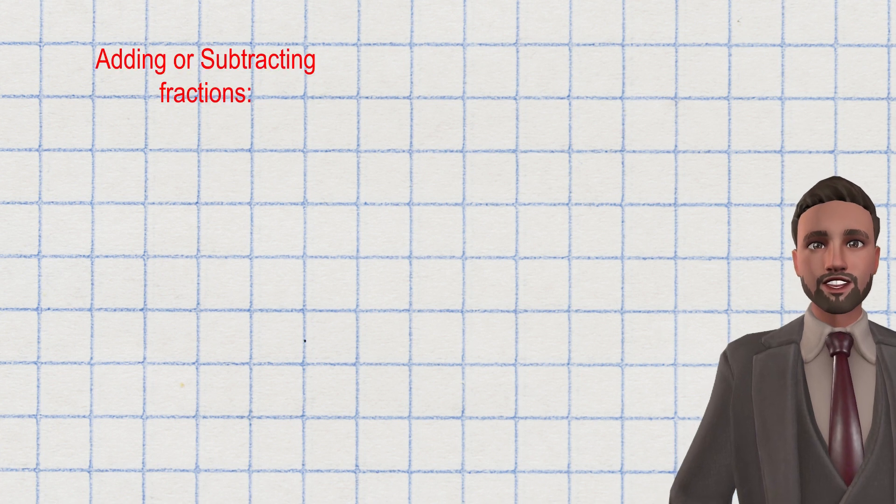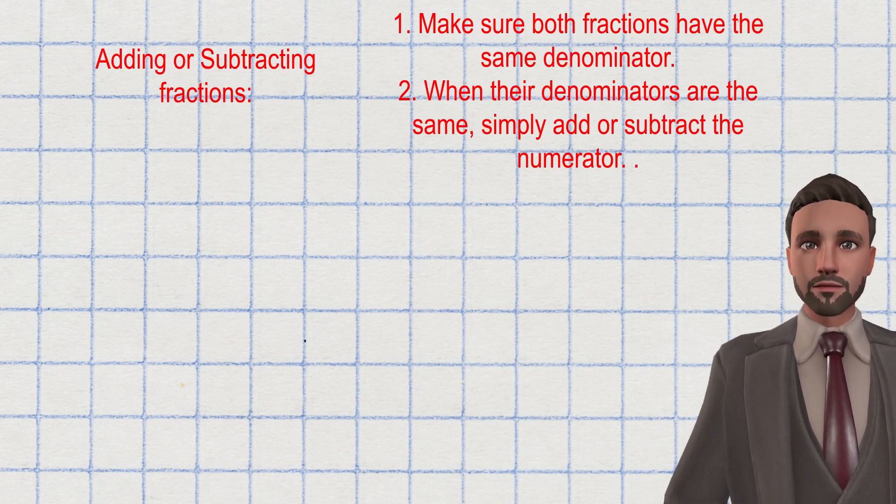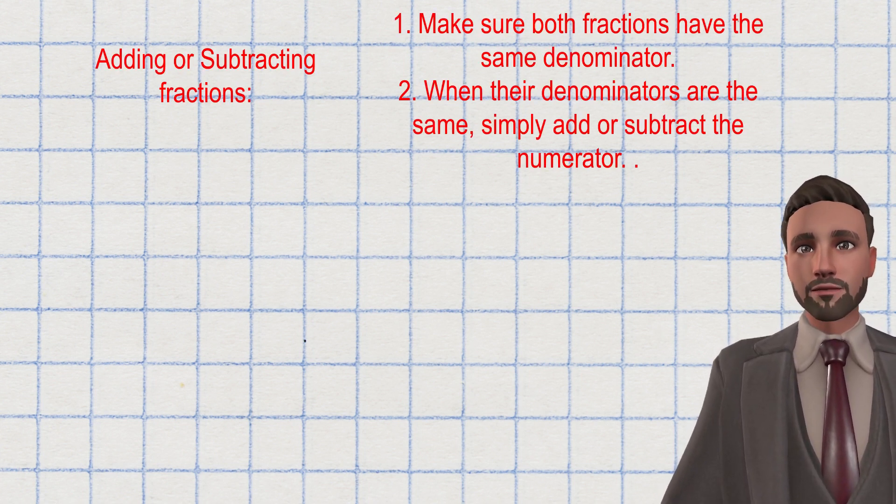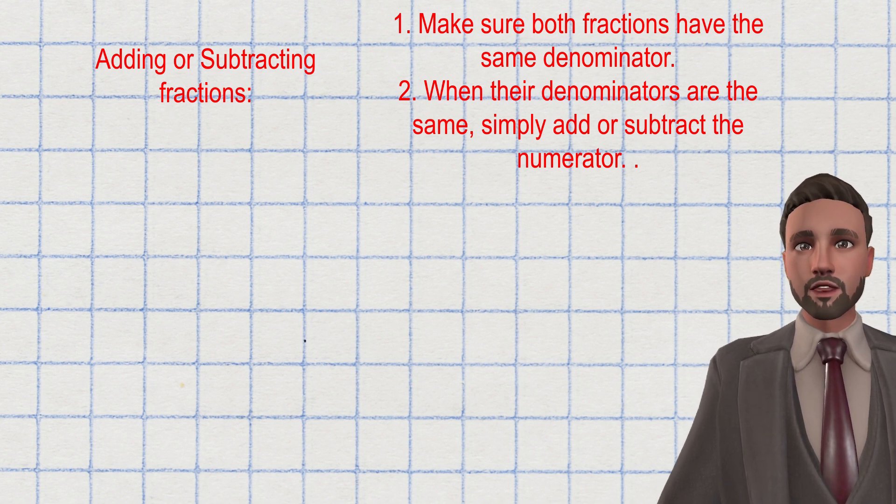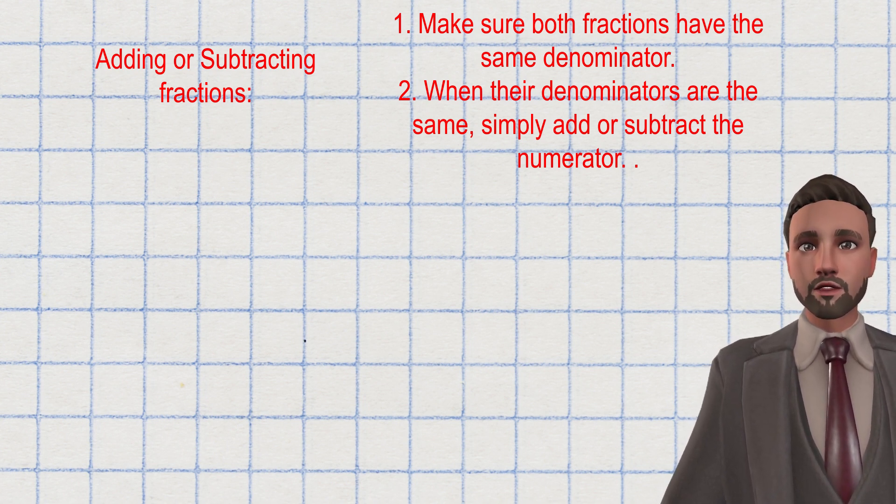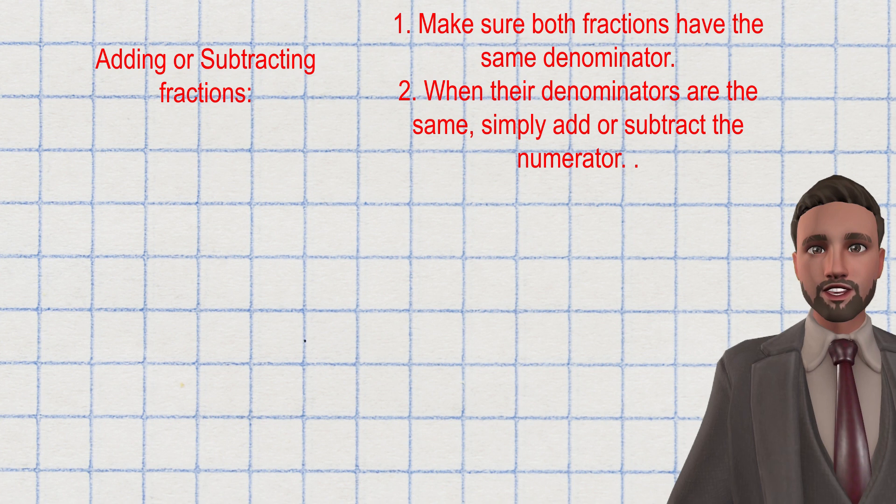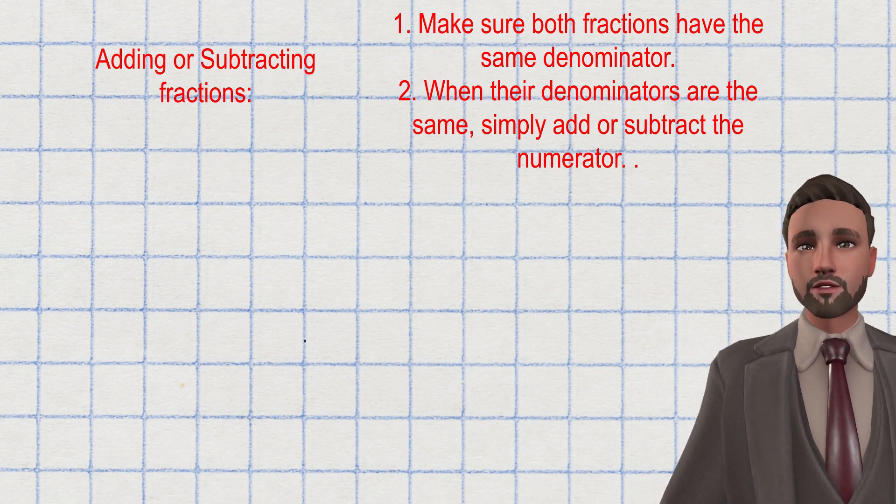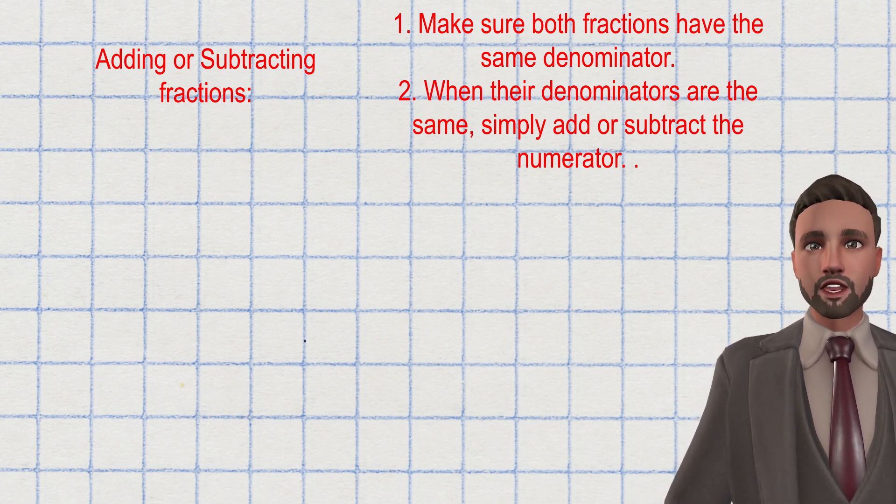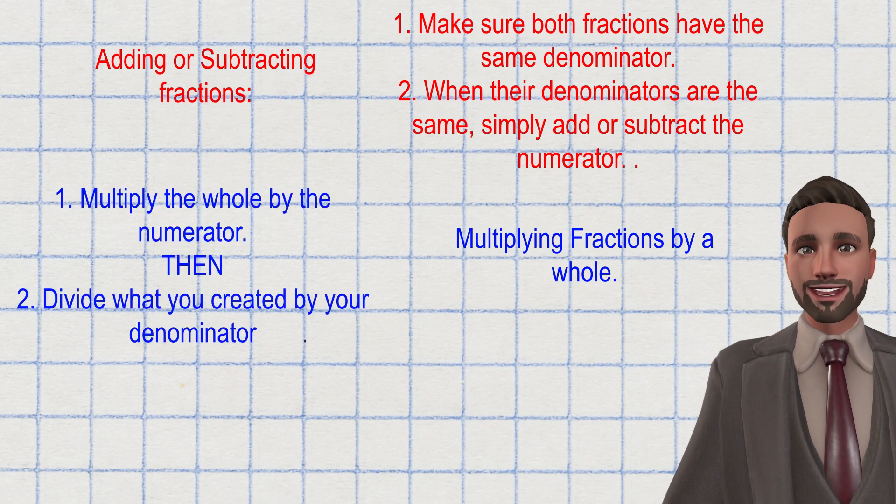So to quickly summarize, when I add or subtract fractions, I need to make sure both fractions have the same denominators. If they don't, I must find a common denominator in which both fractions could be converted into with what we know about equivalent fractions. Then I simply add or subtract the numerators. With multiplication, I multiply the numerator. And if I can, I divide the denominator.